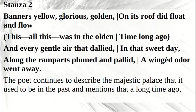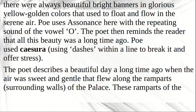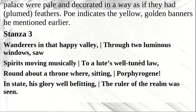Stanza 2. The poet continues to describe the majestic palace as it used to be in the past, mentioning that a long time ago there were always beautiful bright banners in glorious yellow-golden colours that used to float and flow in the serene air. Poe uses assonance here with the repeating sound of the vowel O. The poet then reminds the reader that all this beauty was a long time ago. Poe uses caesura, using dashes within a line to break it and offer stress. The poet describes a beautiful day when the air was sweet and gentle, flowing along the ramparts — the surrounding walls of the palace — which were pale and decorated as if they had plume feathers, indicating the yellow-golden banners mentioned earlier.